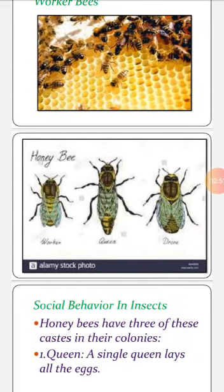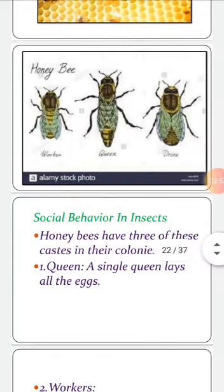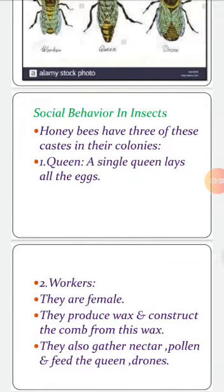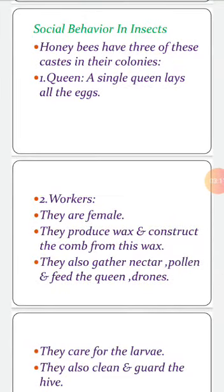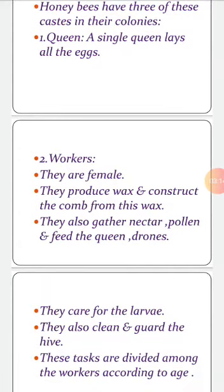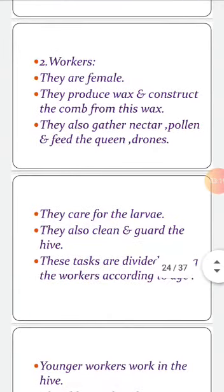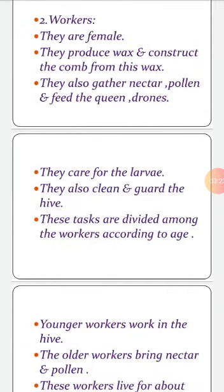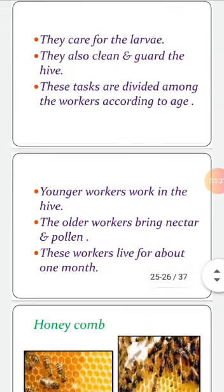Honey bees have three castes in their colonies. Number one is the queen: a single queen lays all the eggs. Workers: they are female, produce wax, and construct comb from this wax. They also gather or collect nectar, juice, and pollens, and feed the queen and drones. They care for the larvae, and clean and guard the hive. Their tasks are divided among the workers according to their age. Younger workers work inside the hive, while older workers perform different functions like bringing nectar, juice, and pollens. These workers live for about one month.